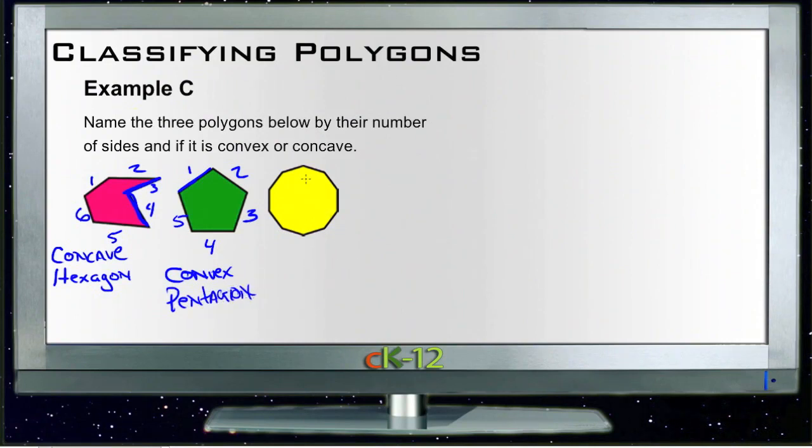And finally, this yellow one, looks like all the sides also bend out on it. So it is also convex. And this one has one, two, three, four, five, six, seven, eight, nine, ten sides. So this one is a decagon.